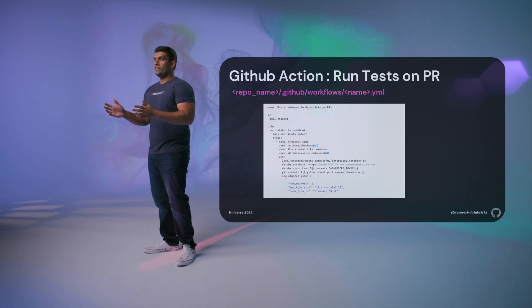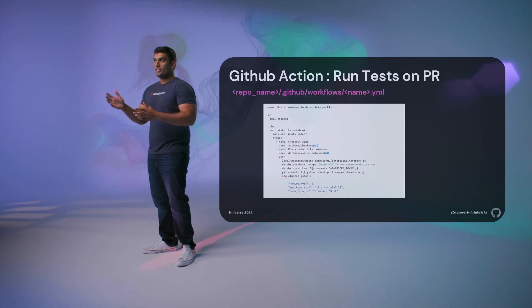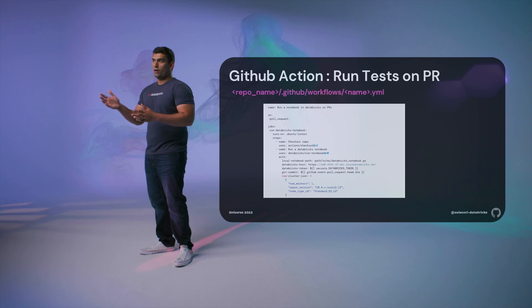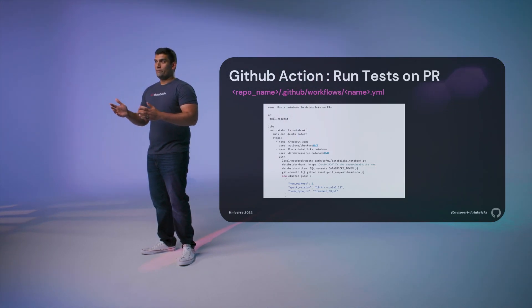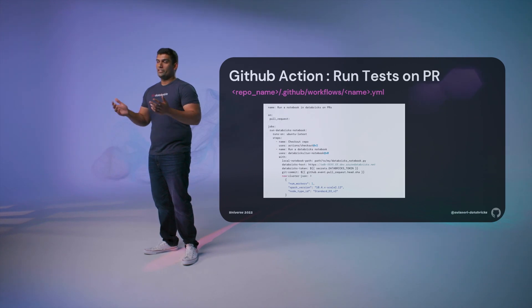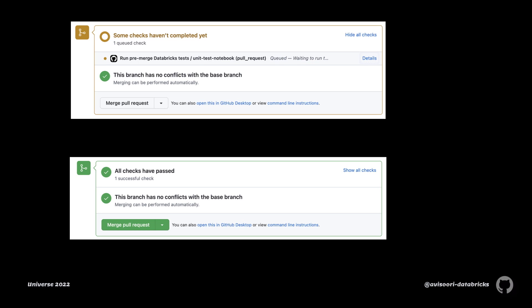Here we check out the development branch and run a set of unit tests in a test notebook with the help of the Databricks Run Notebook GitHub Action. This is run in the Databricks compute cluster specified in the YAML file. Let's say you have a trained isolation forest model and want to introduce it to the pipeline. You change the corresponding cell in the notebook and make a pull request. This pull request triggers the GitHub Action to run all the unit tests. Once the tests pass and everything is good to go, you can merge the pull request and delete the branch.